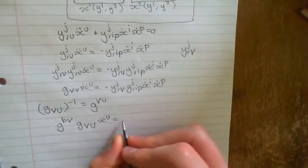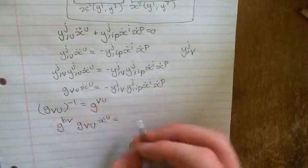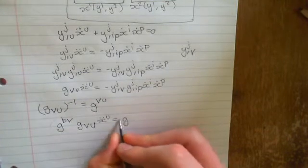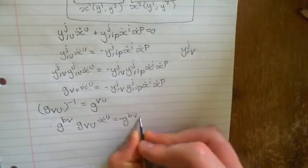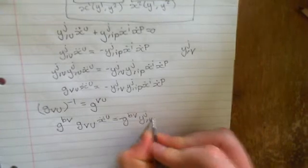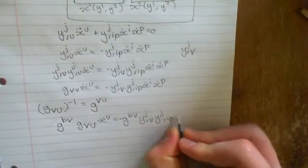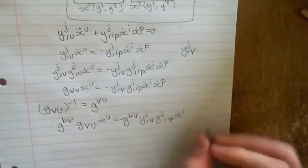This equals the inverse metric tensor here, negative g^bv y_j,v y_j,ip x dot i x dot p.